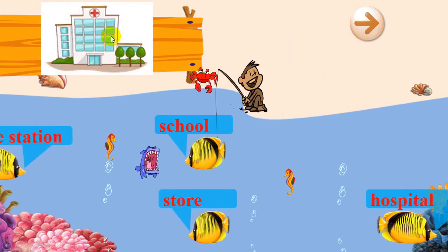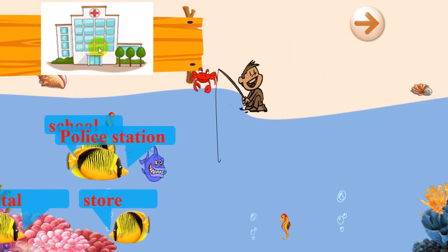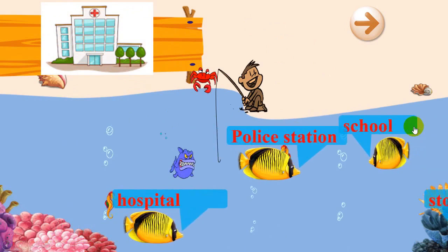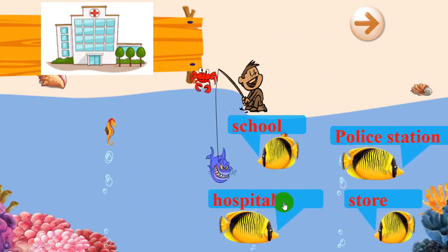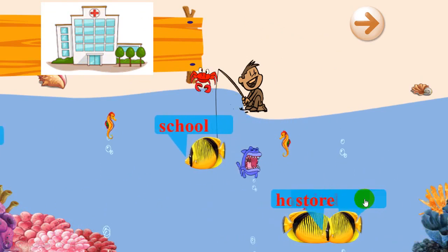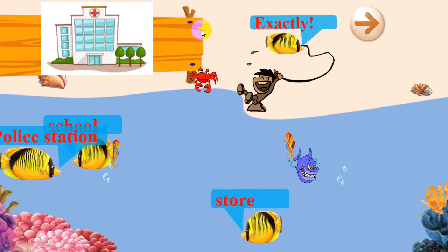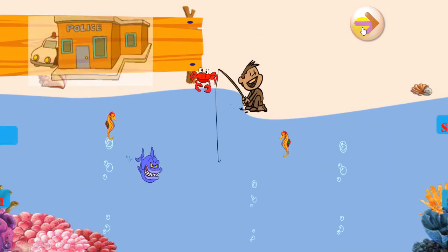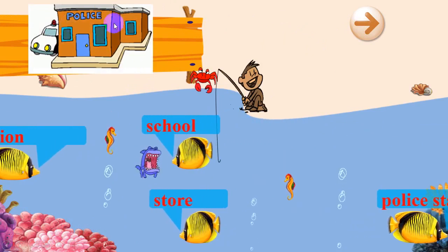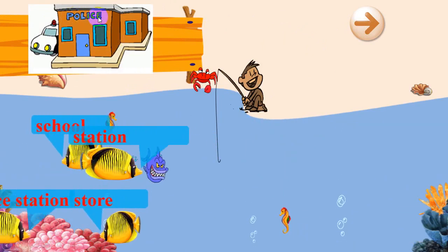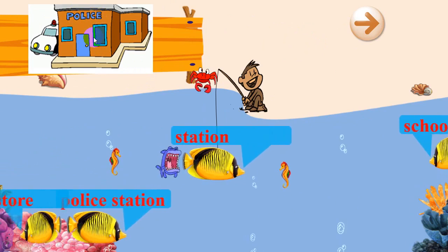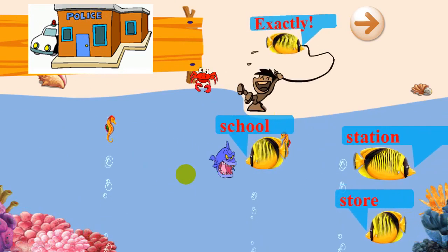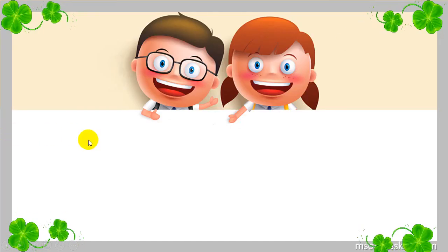Let's take a look at this picture. Can you guess which place is it? Police station? No. School, store, or hospital? Let me try with hospital. Yeah, that's right — this place is hospital. Next. Let's take a look at this picture. I see the word here, so it's easy to know that this place is police station. That's right.